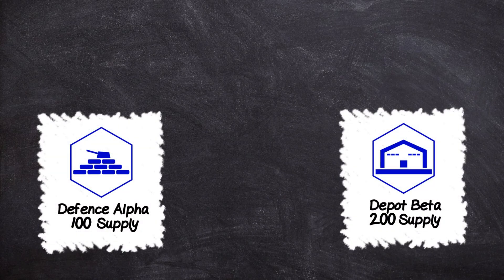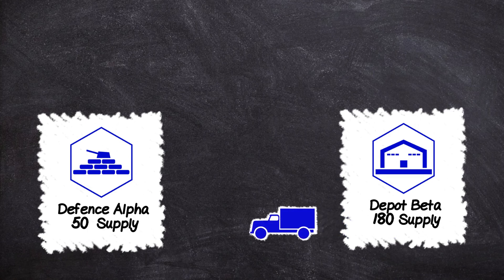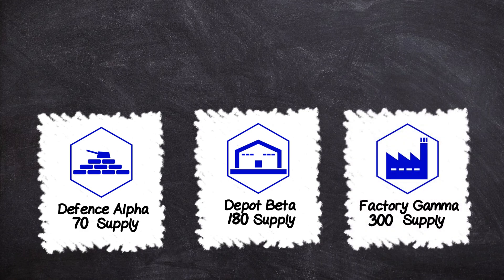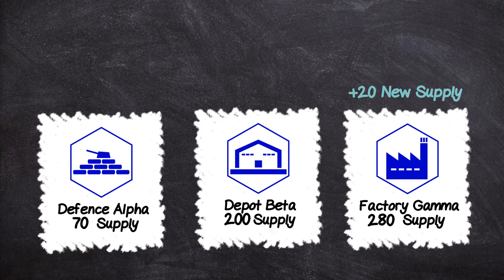For example, let's say Defence Alpha suffers 50 supply worth of damage from enemy bombing. It then gets 20 supply from Depot Beta. Depot Beta in turn needs its supply replenished, so it gets that 20 supply from Factory Gamma. Factory Gamma is a 300 supply objective, so it then generates 20 new supply to replenish itself.